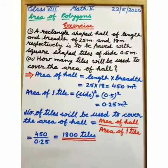Now, we find area of one tile as tile in the shape of square. We will use the formula side square and we get 0.5 whole square is equal to 0.25 meter square.